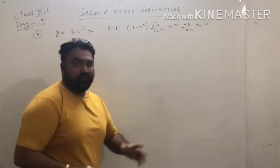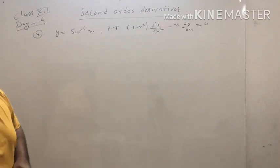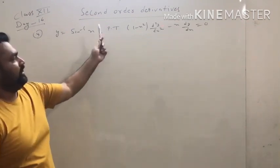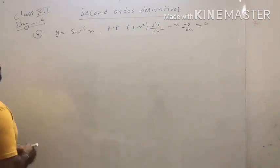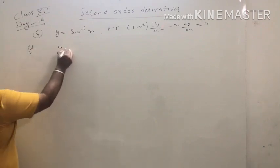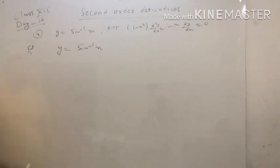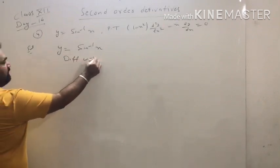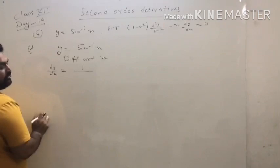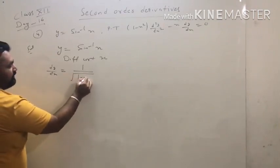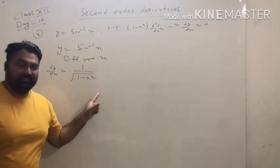There are many questions related to this type. So please listen carefully. y equals sin⁻¹x. We have to prove that (1 − x²)·d²y/dx² − x·(dy/dx) = 0. Solution: differentiate with respect to x. dy/dx equals the derivative of sin⁻¹x which is 1 over √(1 − x²).